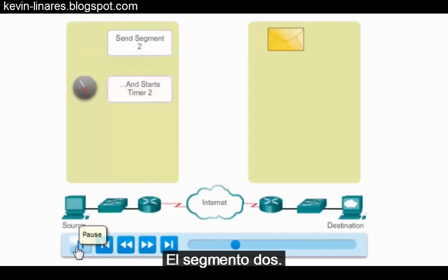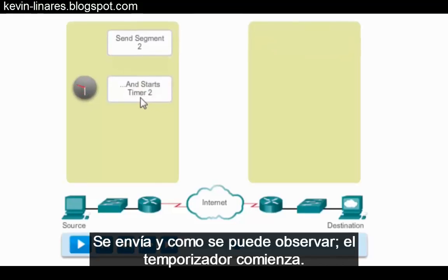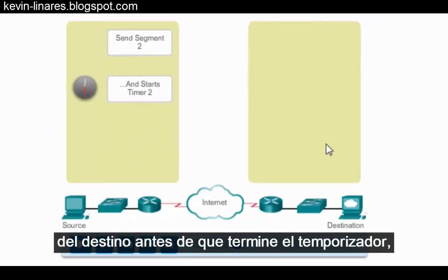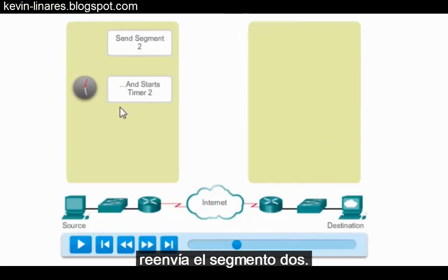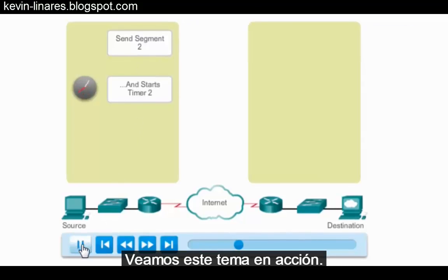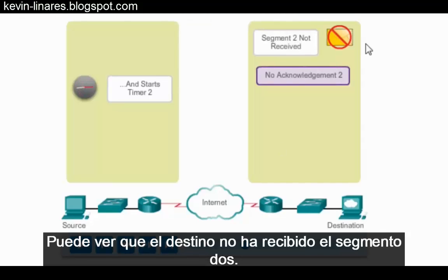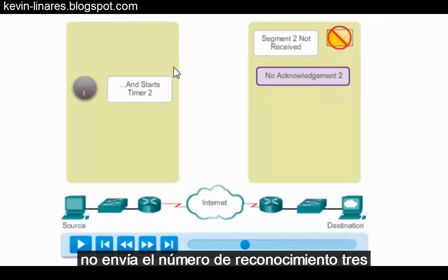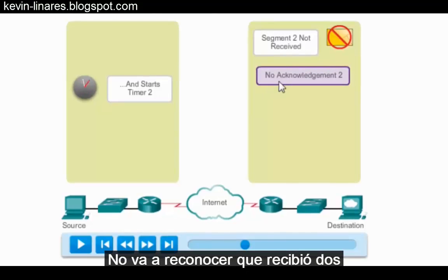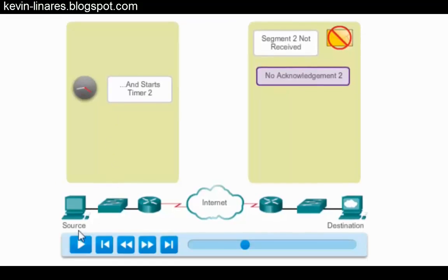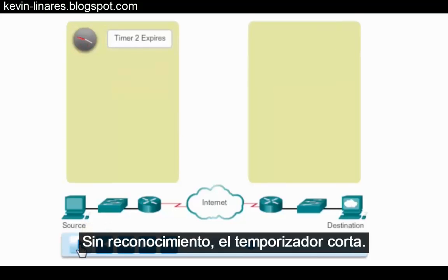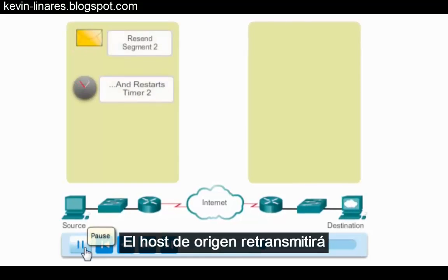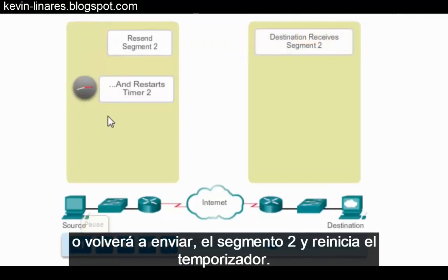There's segment 2 — it's sent. And as you can see, the timer is started. It's going to wait to get an acknowledgement. If it doesn't receive an acknowledgement from the destination before the timer expires, it will resend segment 2. You can see the destination has not received segment 2. Since it hasn't received segment 2, it won't send an acknowledgement — it's not going to send an ACK 3 back to the source host. No acknowledgement. The timer expires.